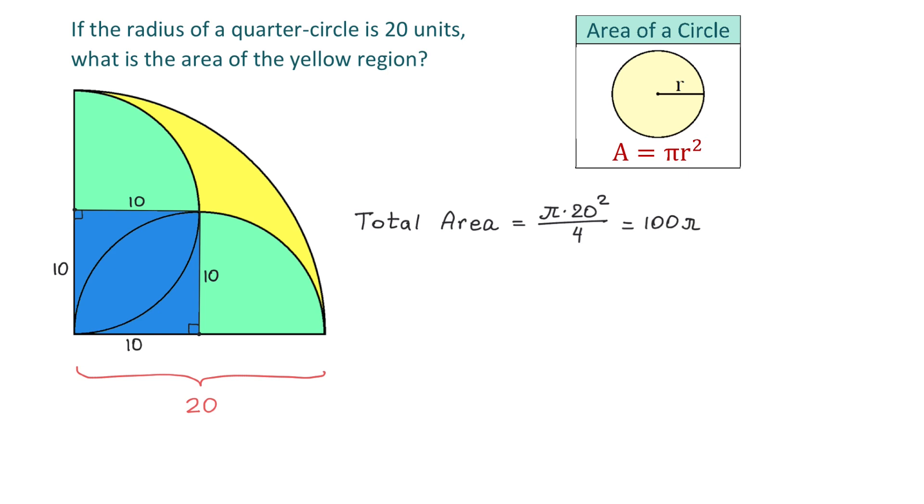Now to find the area of the yellow region from the total area we will subtract the area of the square and the areas of these two small quarter circles. So again, to find the area of the yellow region we will start with the total area which is 100 pi.